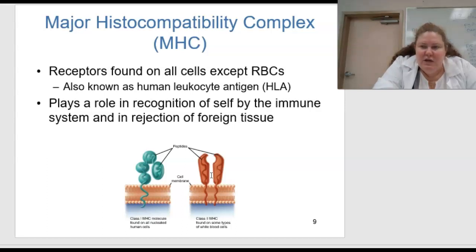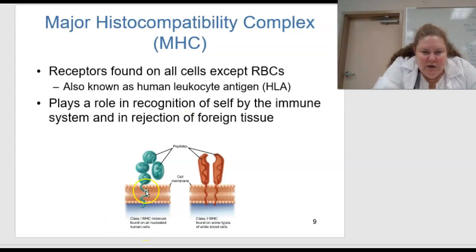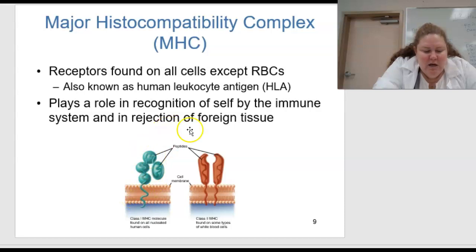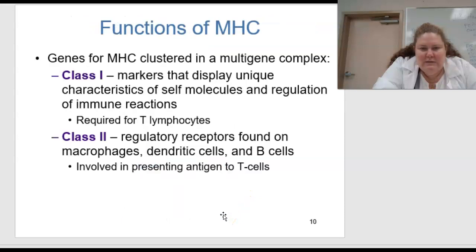This is figure 15.2, showing the molecules of the human major histocompatibility complex. Over here on the left we have Class 1 MHC molecules, which are found on all nucleated human cells. Over here we have Class 2 MHCs, and these are found on some types of white blood cells.